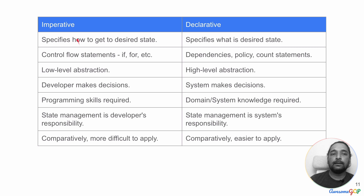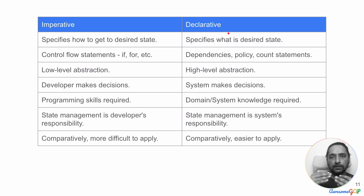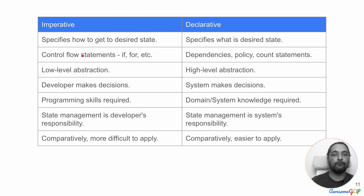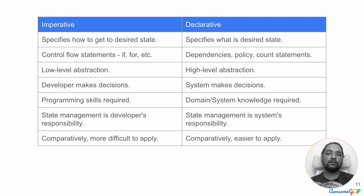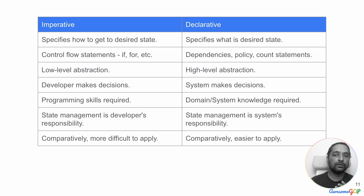In a quick comparison: imperative code specifies how to get to the desired state, so the steps are defined, while the end state is implicit. In the declarative approach, the end state is explicit and the steps to get there are implicit — automatically taken care of by the system. In imperative code you'll usually find statements like 'if' and 'for' to check current state and loop through changes. In declarative code, you're typically specifying dependencies, desired configurations, and count statements like 'we need three replicas.'